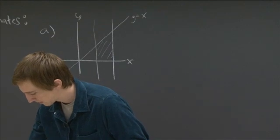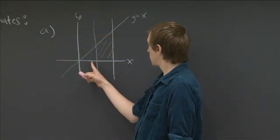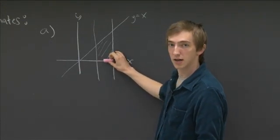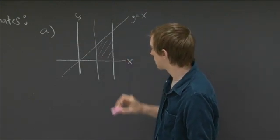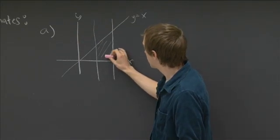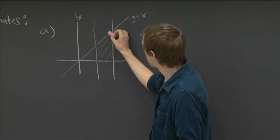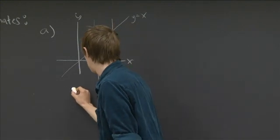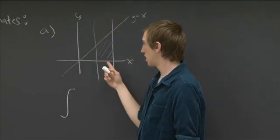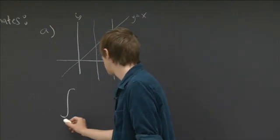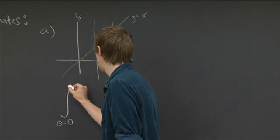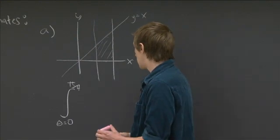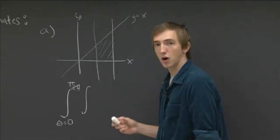Inside this region, the smallest value that theta can be is theta equals 0 — for instance, there's a point at theta equals 0. Then theta runs all the way up; this whole line y equals x is where theta reaches its maximum, at theta equals pi over 4. So it's easiest to write the theta integral on the outside, with theta running from 0 to pi over 4. Now to get the r ranges, it's a bit more subtle.